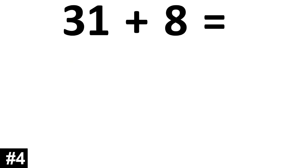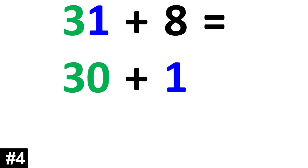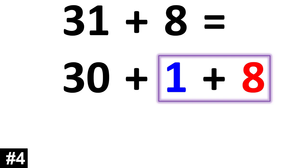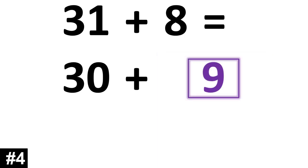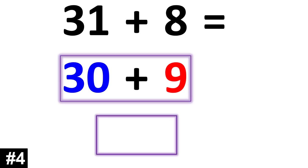31 plus 8. 31 can be broken down into 30 plus 1. So now we add the other 8 and we have 1 plus 8, which gives us 9. 30 plus 9 is 39.